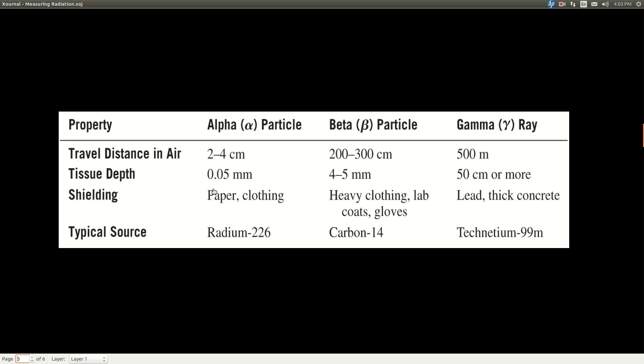And the way you shield against these different particles, paper or clothing, just something thin like that will shield an alpha particle. For a beta particle, you need really heavy clothing, lab coats, gloves, things like that. Whereas to shield a gamma ray, you need lead or thick concrete.